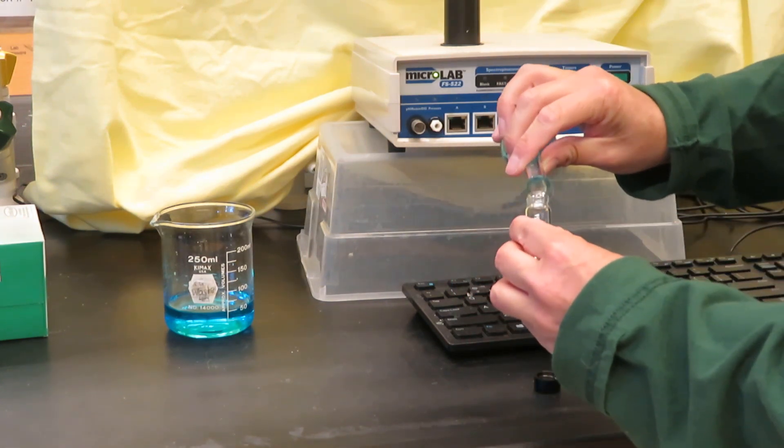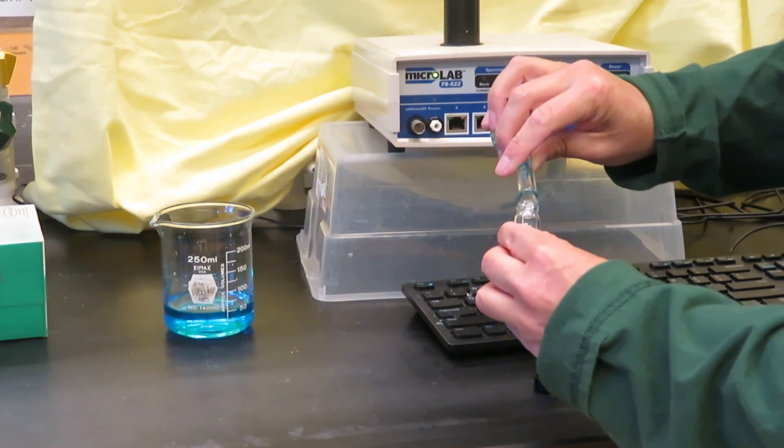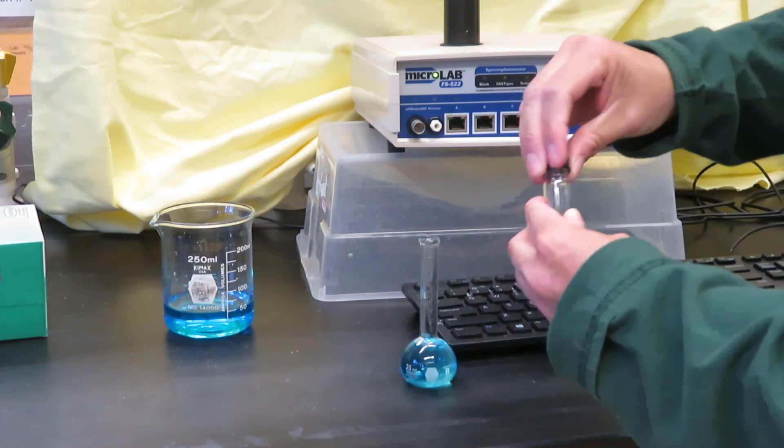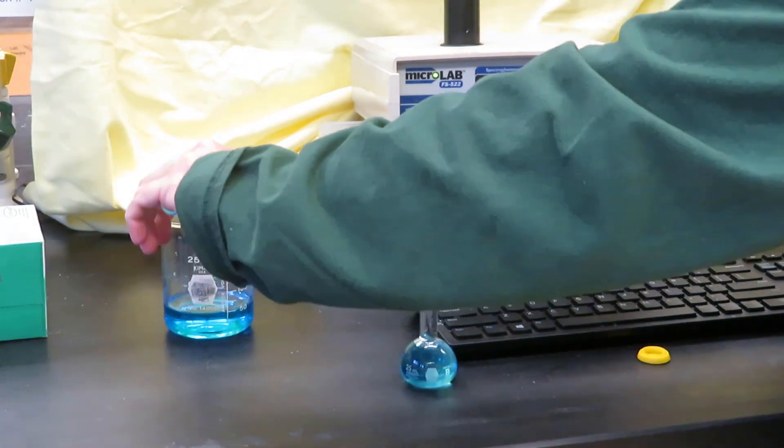There could be some surface tension, so I tap it just a little bit. We want to condition the vial and pour into our waste beaker.